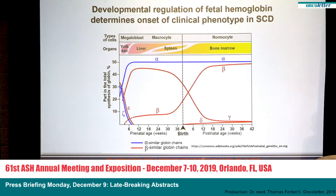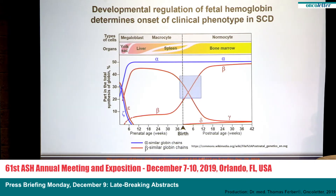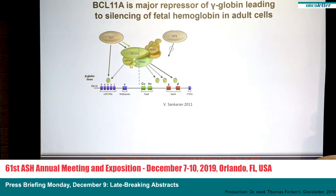The extreme example of this is shown here. When in utero, one expresses almost all their hemoglobin as fetal hemoglobin, and then after birth — marked with the dotted line in the middle — that expression of fetal hemoglobin shuts off and the adult hemoglobin turns on, which in sickle cell disease is the sickle hemoglobin mutation. As clinicians, we know that's relevant because children in the first half to full year of life show no symptoms of sickle cell disease, and then after the switch occurs, that's when patients develop the complications.